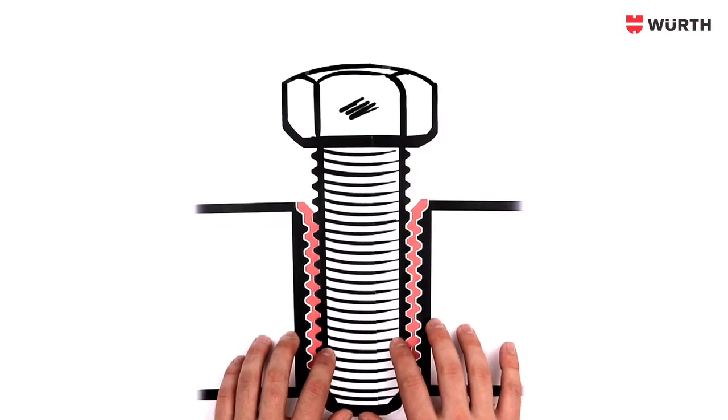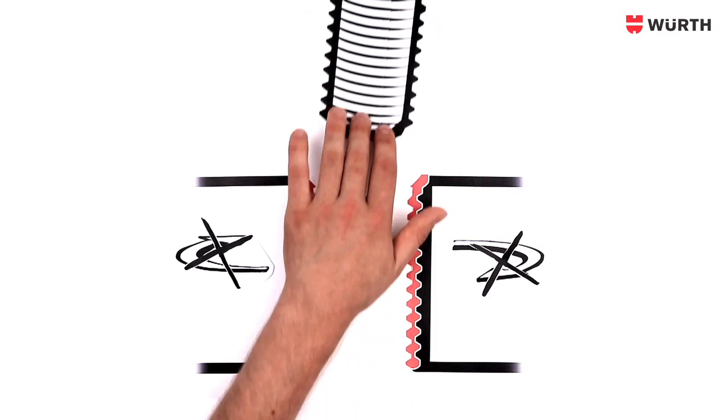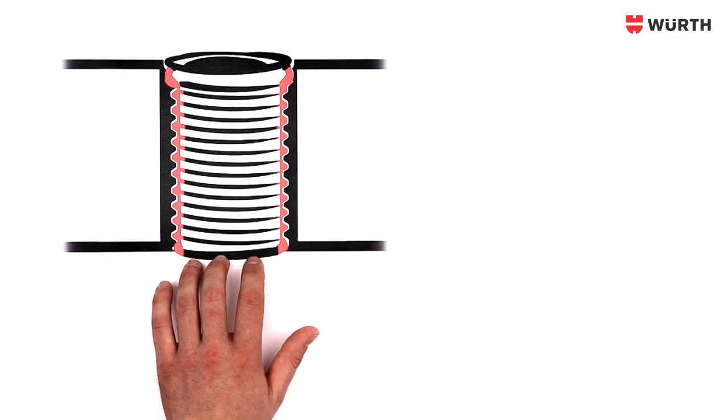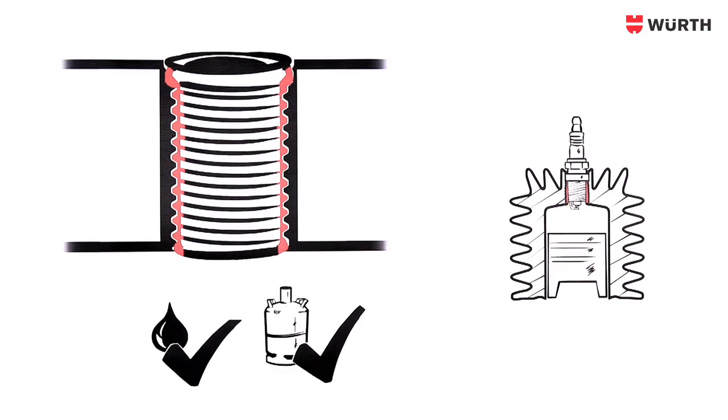This ensures that the insert cannot come loose when the screw is removed. This particularly sturdy connection also means that TimeSert is gas-and-watertight. It can therefore also be used for spark-plug threads, for example.